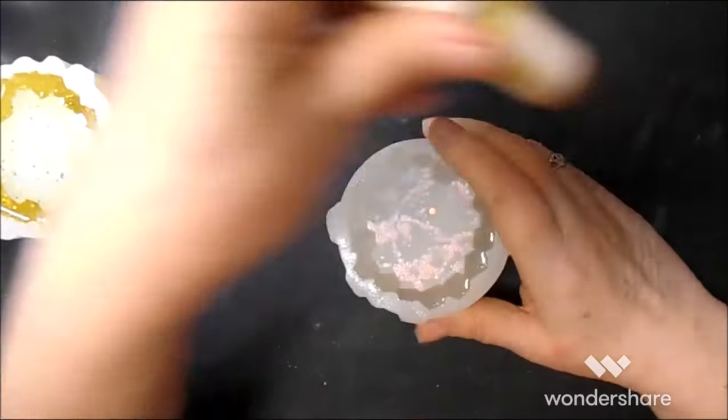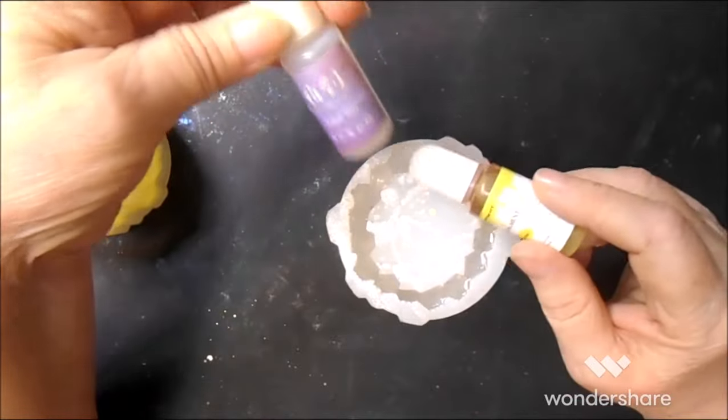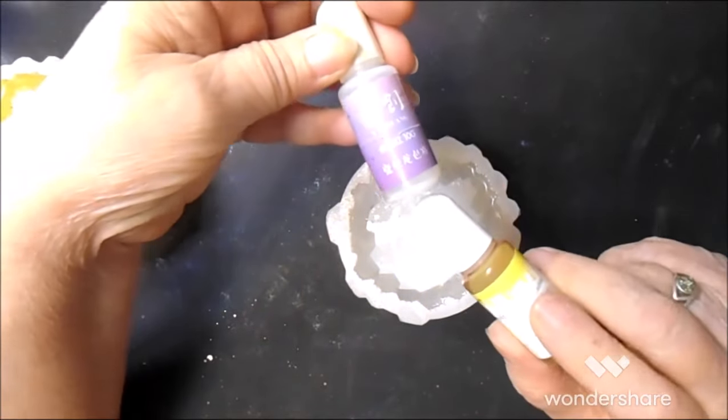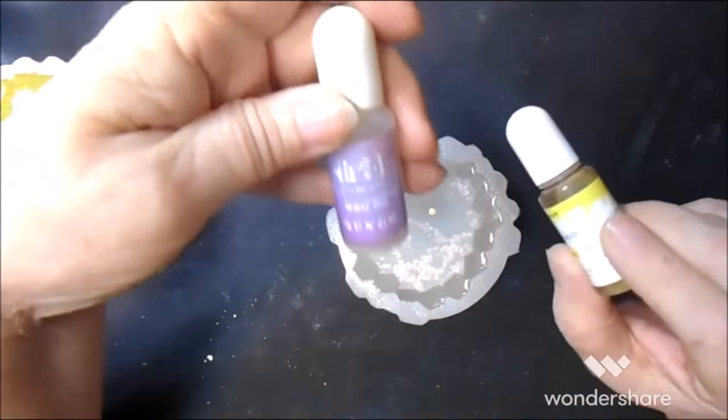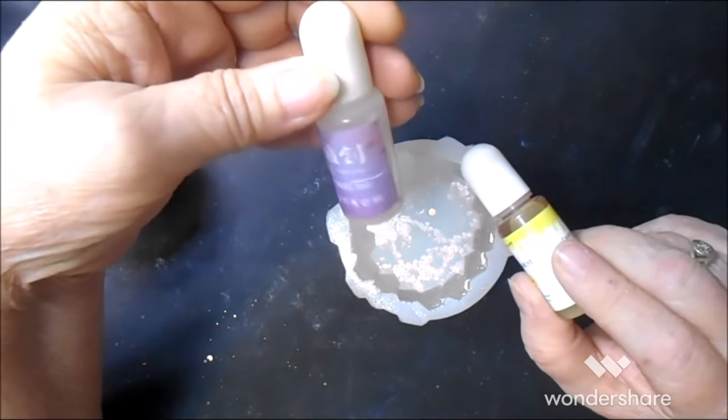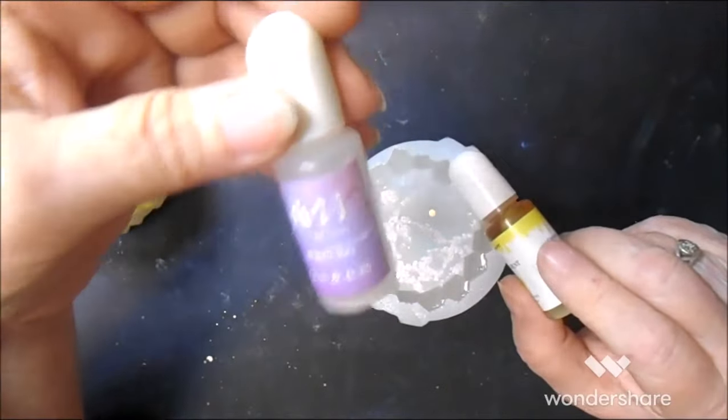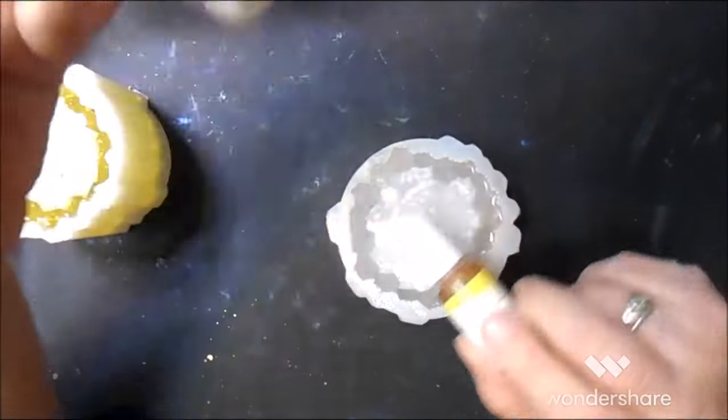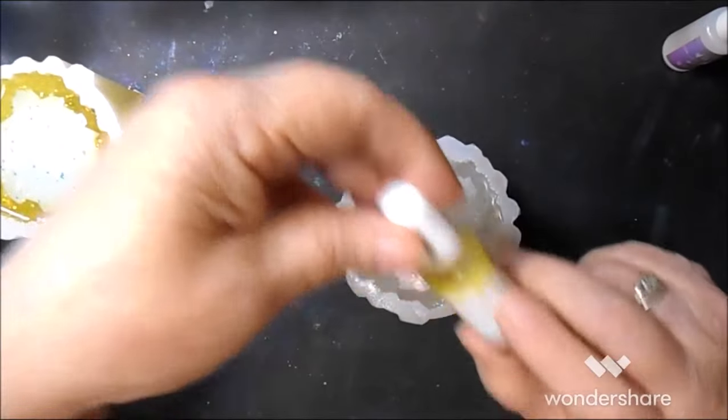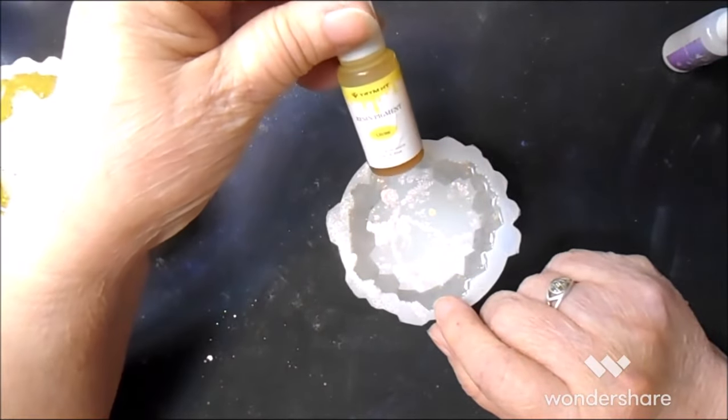Okay, these are the ones that we used. This one is an interference additive for resin. I don't remember whether it's alcohol ink or resin dye, but anyway, and this one is the citrine.